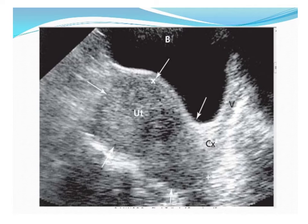This is an ultrasound picture of a fibroid in the cavity of the uterus. You can see the circumscribed fibroid inside the cavity, the cervix, vagina, and urinary bladder. The arrows mark the presence of the fibroid.